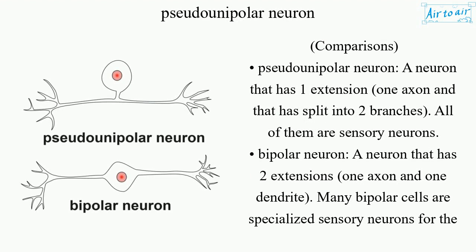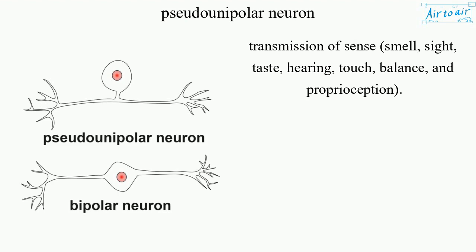Comparisons. Pseudo-unipolar neuron: a neuron that has one extension, one axon, that has split into two branches; all of them are sensory neurons. Bipolar neuron: a neuron that has two extensions, one axon and one dendrite; many bipolar cells are specialized sensory neurons for the transmission of sense — smell, sight, taste, hearing, touch, balance, and proprioception.